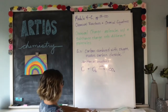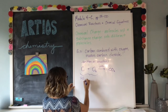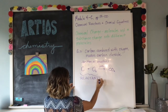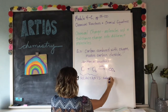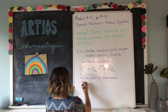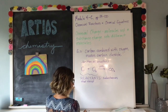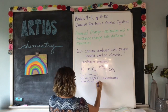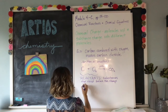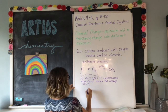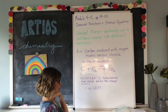The substances on the left side of the equation are called the reactants — they are the things that are reacting together. Reactants are the substances that exist before the chemical change occurs, and they are always written on the left. So carbon and oxygen are our two reactants.